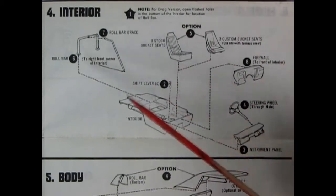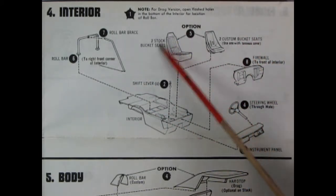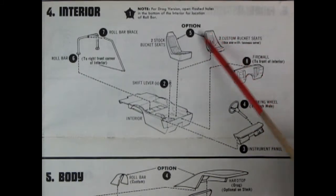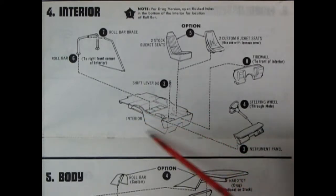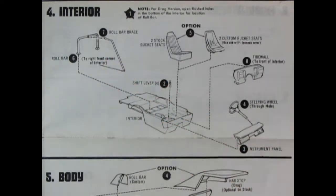Panel four shows our interior going together. There are quite a few options in here. You get the stock bucket seats, or you can switch them out for the custom and race seats. A firewall, steering wheel, dashboard, interior bucket tub, and a two piece roll bar.